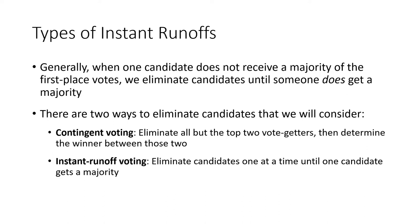There are two ways to eliminate candidates. One method is contingent voting, where we eliminate all but the top two vote getters, then determine the winner between those two. There's also instant runoff voting — though unfortunately the name is a bit confusing, since instant runoffs are a broad category of methods, while instant runoff voting is one specific method where we eliminate candidates one at a time until one candidate receives a majority.